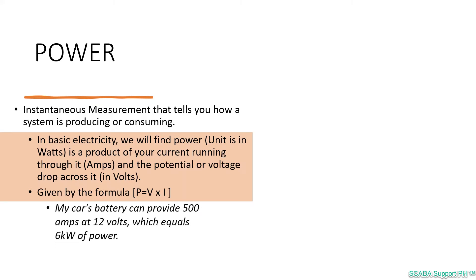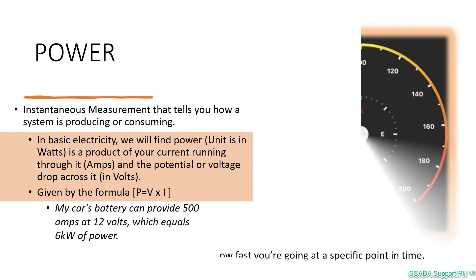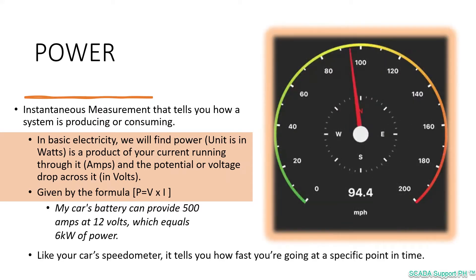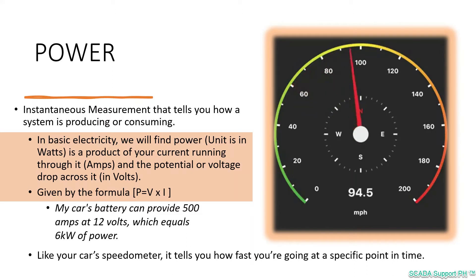If we associate that calculation in real life, we can say that a car battery can produce 500 amps at 12 volts, which equals 6 kilowatts of power. Similarly, we can measure power like what your car's speedometer does, as it tells you how fast you're going at a specific point in time.